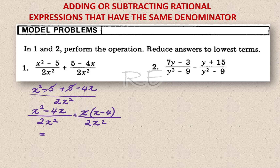x over x is 1, leaving x minus 4 in the numerator. And 2x squared divided by x is 2x. So the answer is x minus 4 divided by 2x.